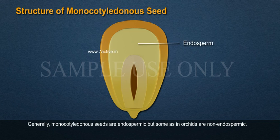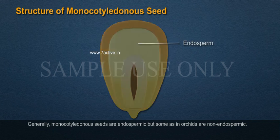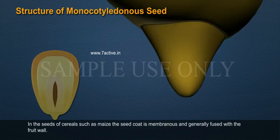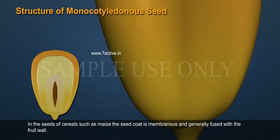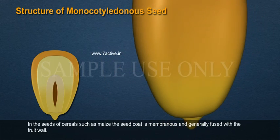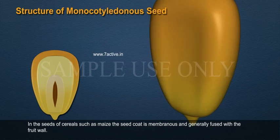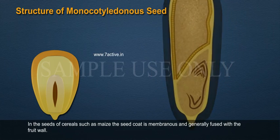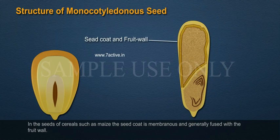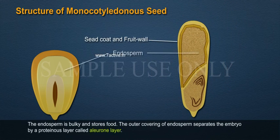Structure of monocotyledonous seed: generally monocotyledonous seeds are endospermic, but some, as in orchids, are non-endospermic. In the seeds of cereals such as maize, the seed coat is membranous and generally fused with the fruit wall. The endosperm is bulky and stores food.